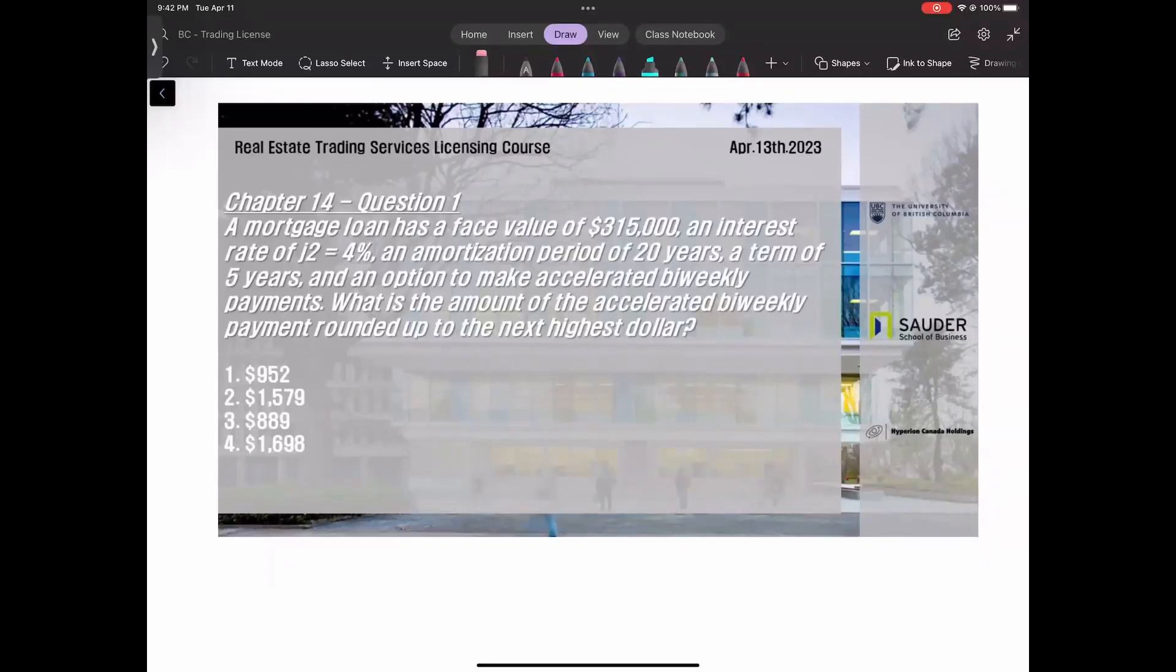Let's solve today's practice problem. The mortgage loan face value is $315,000, interest rate j2 is 4%, amortization period is 20 years, term is 5 years, and there's an option to make accelerated biweekly payments. Accelerated biweekly payment means paying every two weeks.